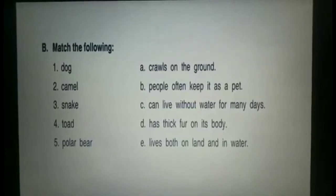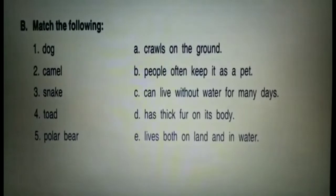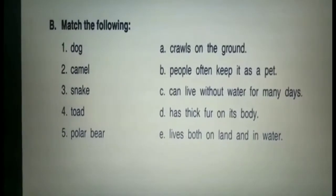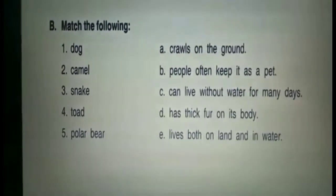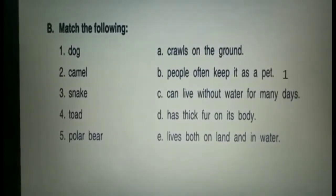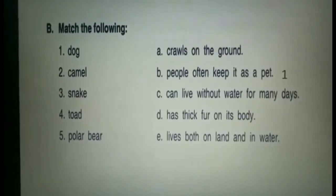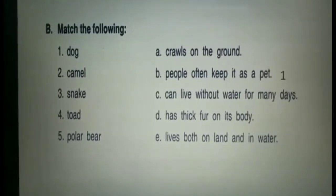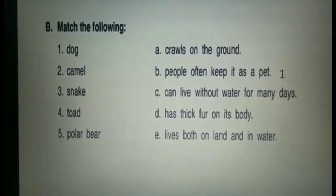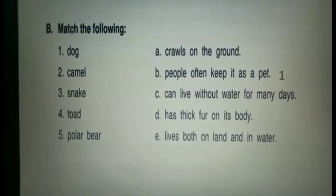Here some animals are given with their characters. You have to match animals with their specific characters. The first animal is dog — the answer is option B: people often keep it as a pet. Write 1 in front of B. The second animal is camel — the answer is: can live without water for many days.